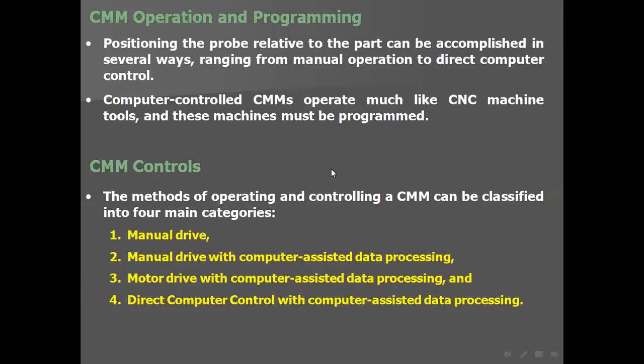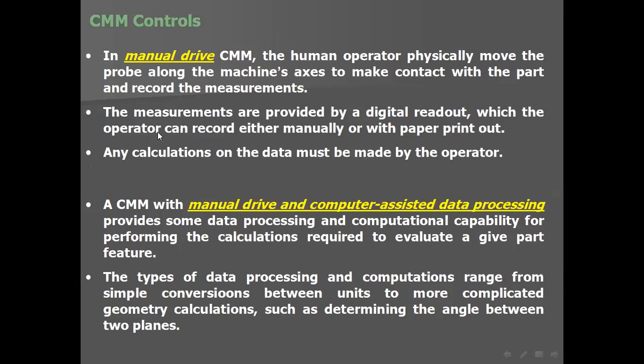For CMM controls, there are several types. Manual drive: the human operator physically moves the probe along the machine's axis to make contact with the part and record measurements. Measurements are provided by a digital readout which the operator can record manually or via paper printout. Any calculations on the data must also be made by the operator.